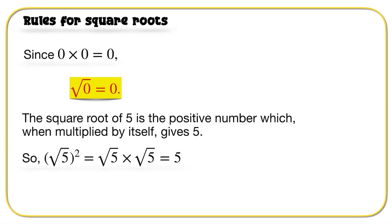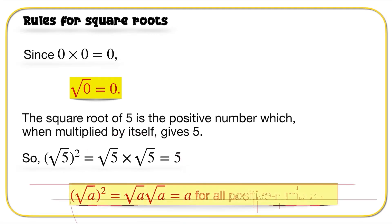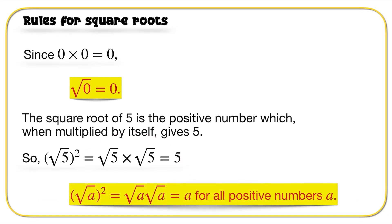The square root of 5 is a positive number which, when multiplied by itself, gives 5. So: the root of 5 squared can be written as root 5 times root 5, which equals 5. For all possible numbers A, root A times root A is equal to A. Any root multiplied by itself equals the value under that root.